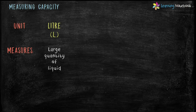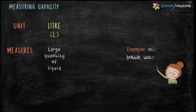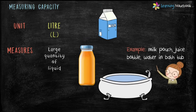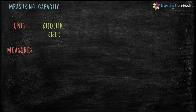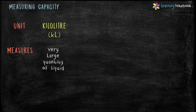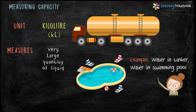The second unit to measure capacity is liter, denoted by L. Liter is used to measure large quantities of liquid — for example, milk pouches, juice bottles, and water in a bathtub. The third unit to measure capacity is kiloliter, denoted by kl, and it is used to measure very large quantities of liquid.